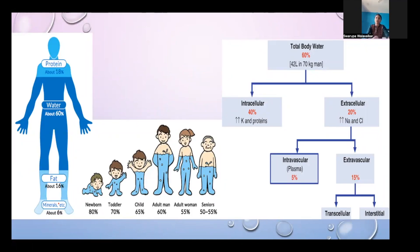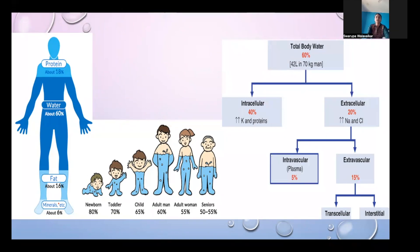The average adult male is approximately 60% water. This varies with age, gender, and body habitus — it is 55% in adult females, 80% in newborns, and approximately 65% in children. Around two-thirds is distributed into the intracellular compartment and the remaining one-third into the extracellular compartment.